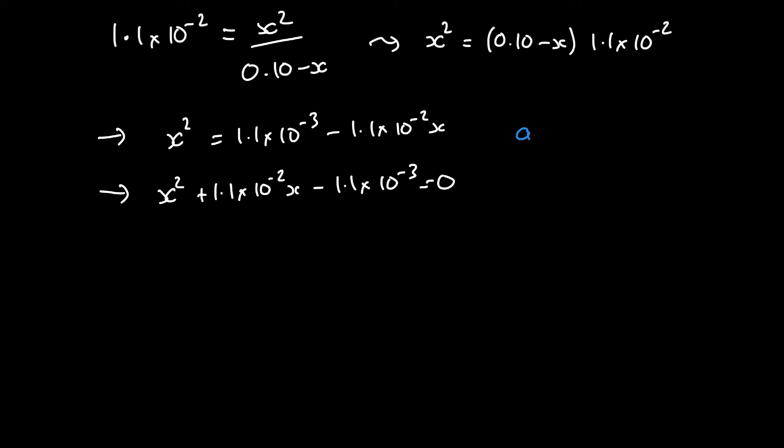And remember our quadratic equation, right? So we've got ax squared plus bx plus c equals 0. And we've got two roots. So x is minus b plus or minus root b squared minus 4ac all divided by 2a.